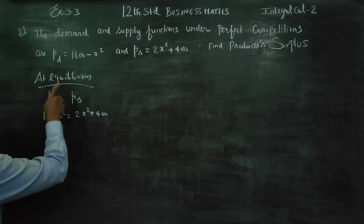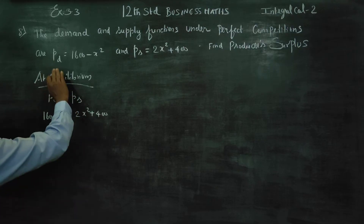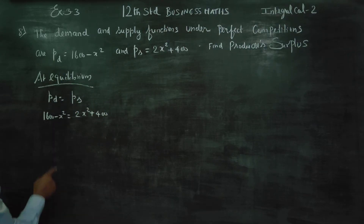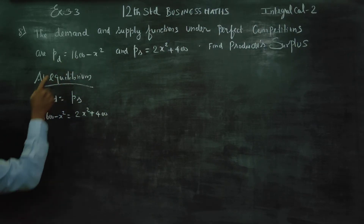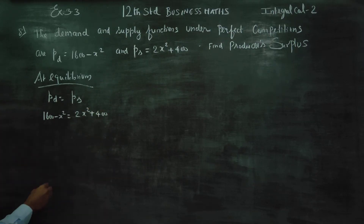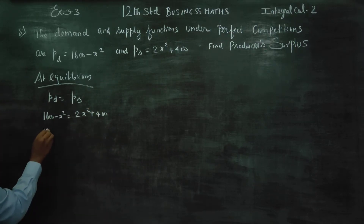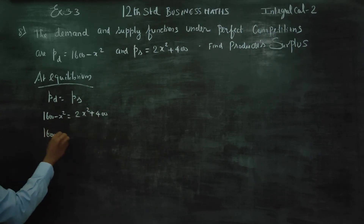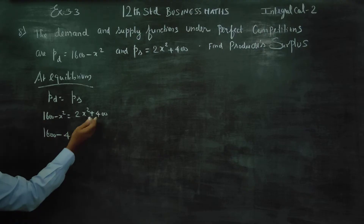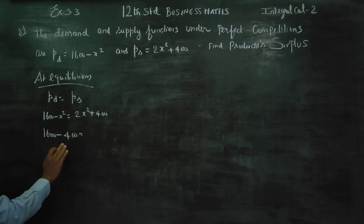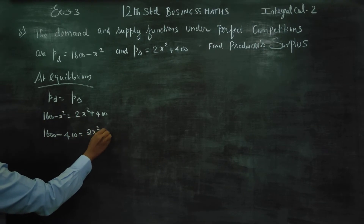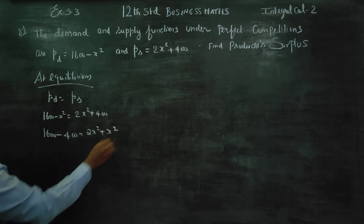At equilibrium, demand equals supply. Setting them equal: 1060 minus x squared equals 2x squared plus 400. Rearranging: 1060 minus 400 equals 2x squared plus x squared, giving 3x squared equals 660.